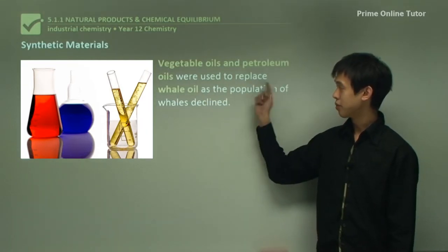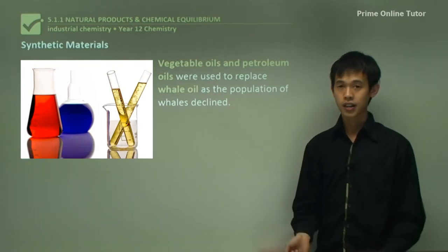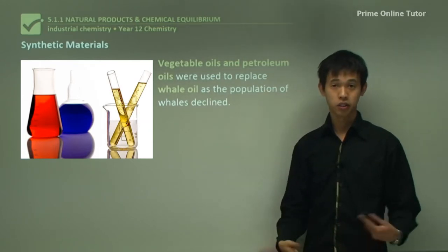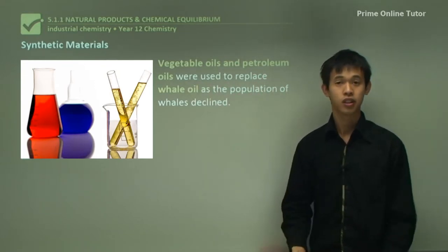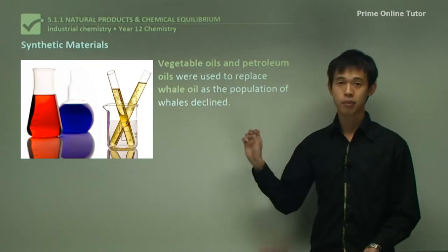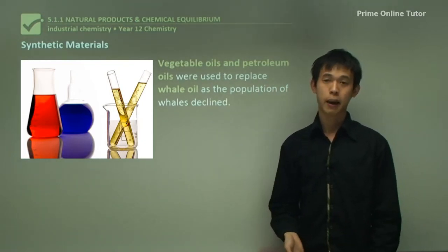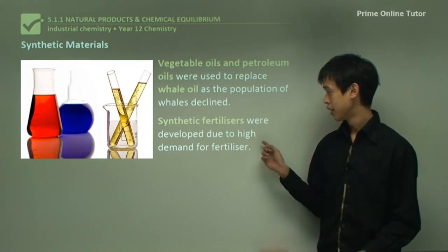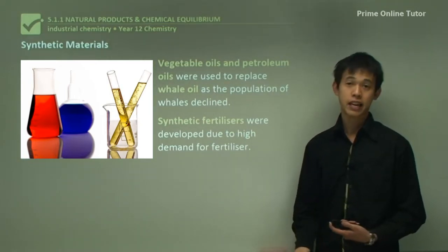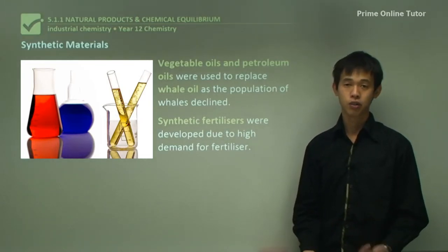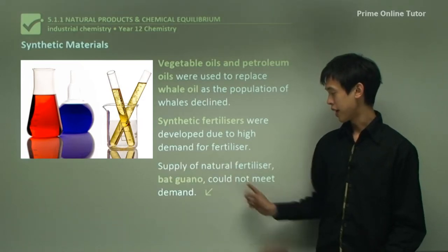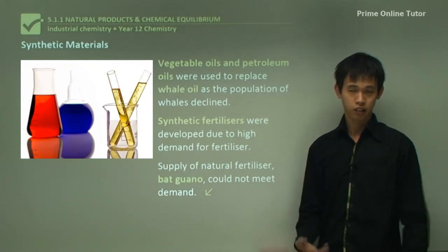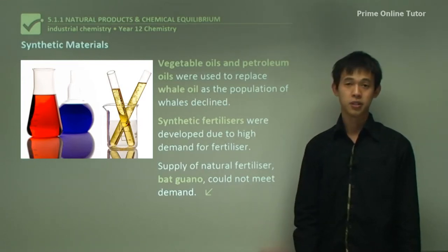For example, vegetable oil and petroleum oils were used to replace whale oil as the whale population declined. As demand for whale oil increased and the whale population decreased, there wasn't enough to go around, so we resorted to petroleum and vegetable oils to fill that gap. Another example is synthetic fertilizer - the supply of natural fertilizer, bat guano (bat feces), could not meet the growing demand of agriculture, so synthetic fertilizers had to be produced.